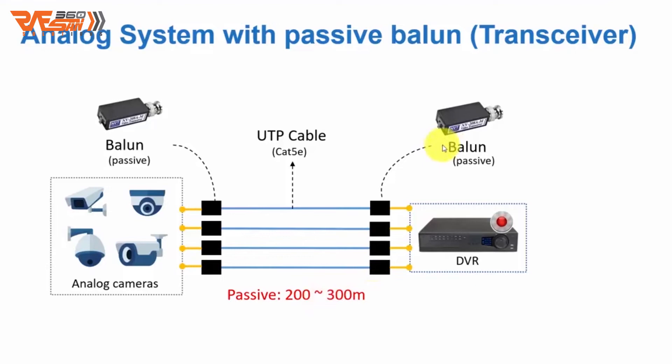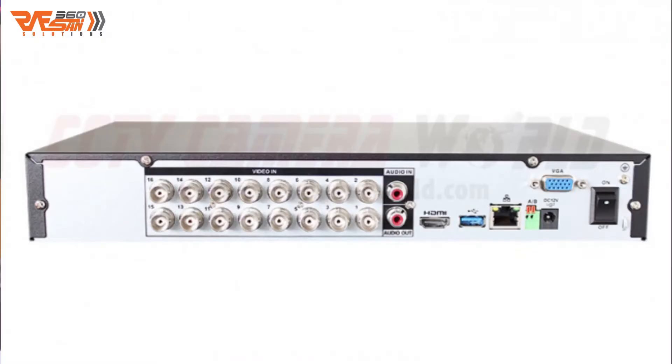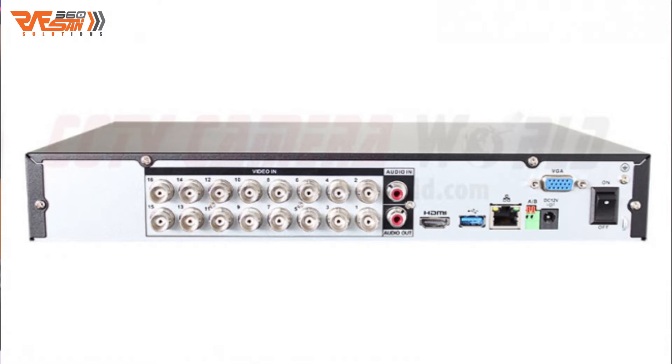Let's go to the next video balun type. Number one: passive video balun. In passive video balun, the data will be transferred passively. This connects to DVR or XVR via F type, RCA type, or BNC type port. The camera can be added to the DVR or XVR using this connection.